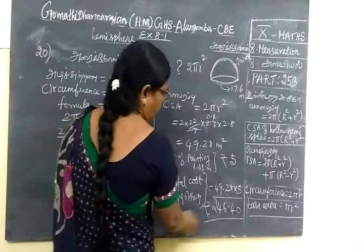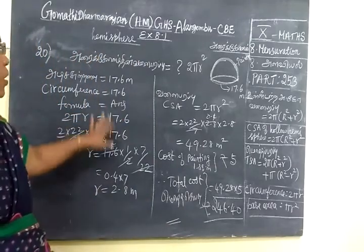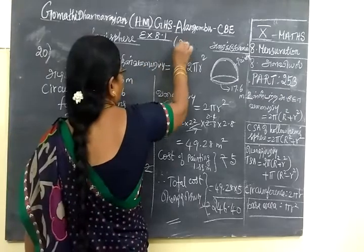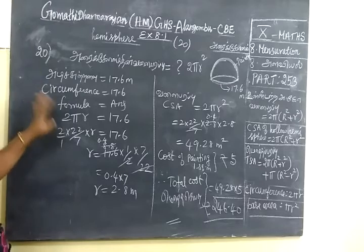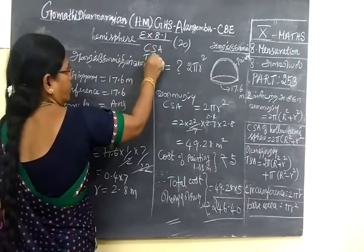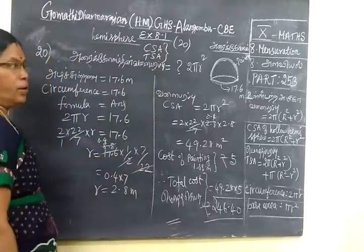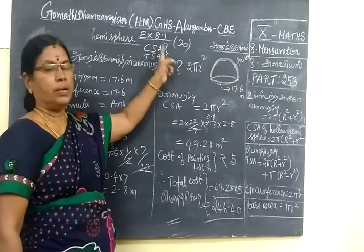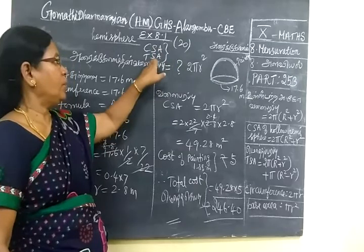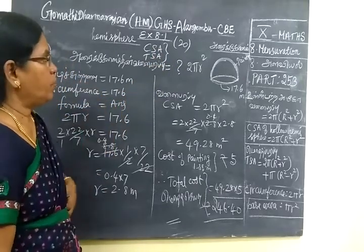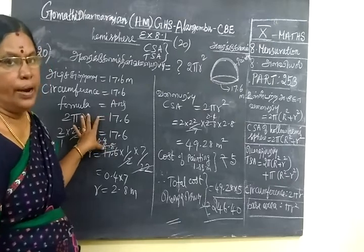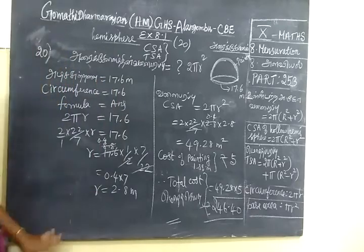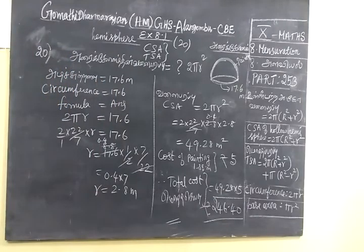Only for time saving I am writing the answer directly. So after this it is over. Next we are seeing exercise 8.2: TSA of cylinder, TSA of cone, TSA of hollow cylinder, TSA of hollow cone. Then we will see volume.